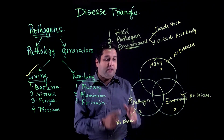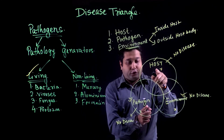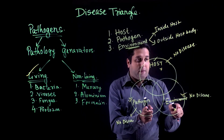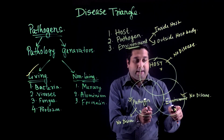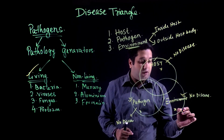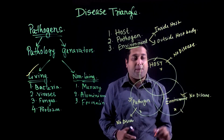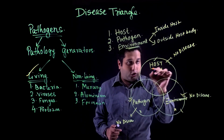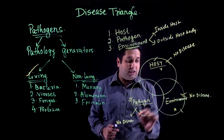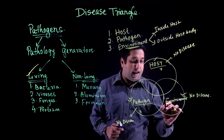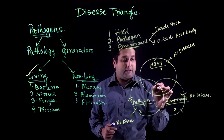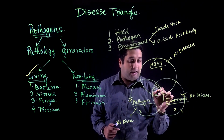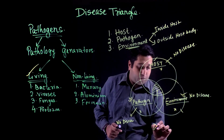Next, if we consider that the host and pathogen are present but the environment is absent, disease is also not possible. Disease is only possible if the host is present, the pathogen is present, and the environmental conditions are present — then only the disease is possible.